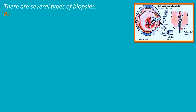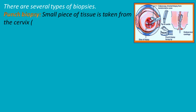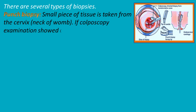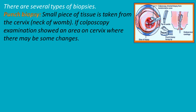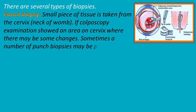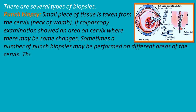There are several types of biopsies. Punch biopsy: a small piece of tissue is taken from the cervix, the neck of the womb. If colposcopy examination showed an area on the cervix where there may be some changes, sometimes a number of punch biopsies may be performed on different areas of the cervix.